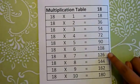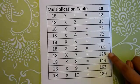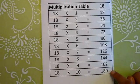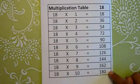18 sixes are 108, 18 sevens are 126, 18 eights are 144, 18 nines are 162, 18 tens are 180. Next,